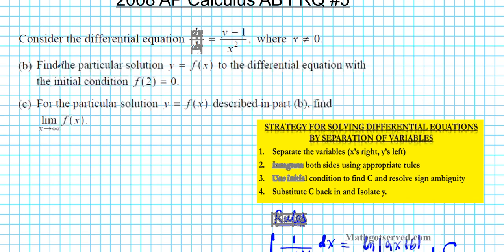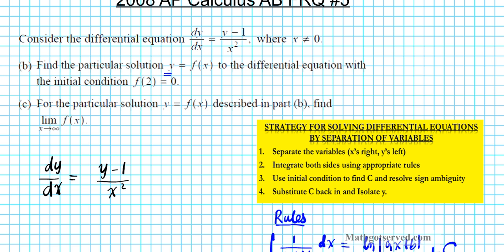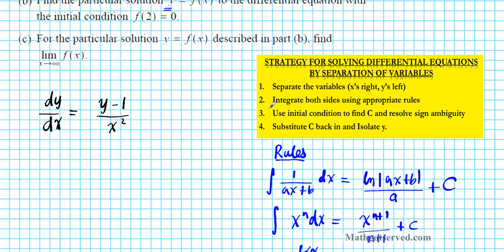Let's get started. For part B, we have to find the particular solution Y equals F of X — basically isolating Y — of the differential equation dy/dx equals Y minus 1 over X squared, with the initial condition F of 2 equals 0. Following our strategy, we'll separate the variables, putting all the X's on the right and the Y's on the left.